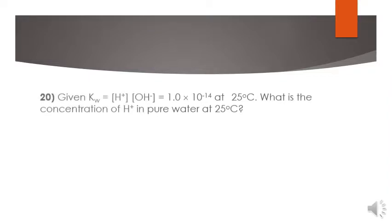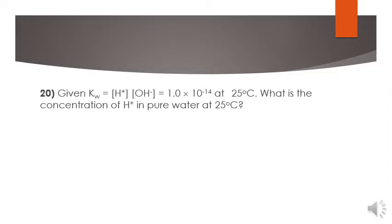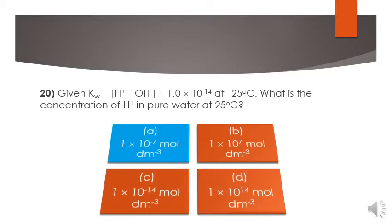The last MCQ: given KW, H+ or OH- ion equals 1.0 times 10 raised power minus 14 at 25 degrees Celsius. What is the concentration of hydrogen ion in pure water at 25 degrees Celsius? We solved this in previous lecture. Go back and grab the concept. A option is the correct option for this MCQ.